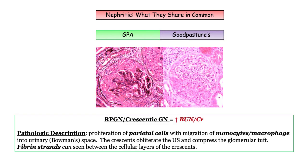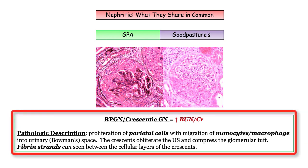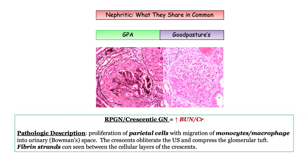Here is a key detail: what do you need to know about crescents? They will be associated with a significant rise in the BUN and creatinine. Obliteration of the urinary space and compression of the glomerular tuft explains the drop in GFR. You should be familiar with the pathologic description, including parietal cell proliferation with the presence of mononuclear cells and fibrin strands. No matter the cause, crescents are a negative prognosticator for renal recovery from any acute injury.